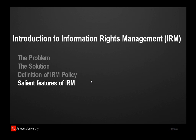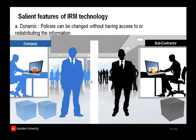Now let's look at the salient features of IRM. First is the dynamic feature, where policies can be changed without redistributing the information. For example, if a company wants to delete a document sent to a subcontractor, all they need to do is press a button on their computer and the document is automatically deleted from the subcontractor's computer. It's like a remote control for documents on the recipient side.